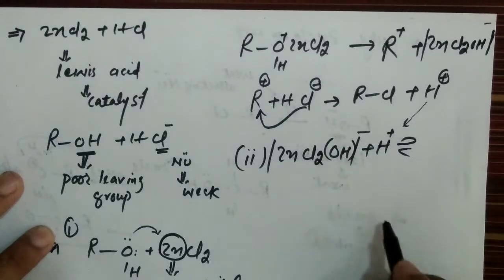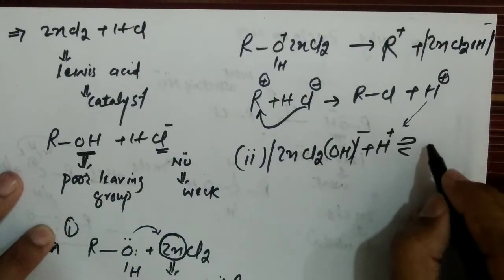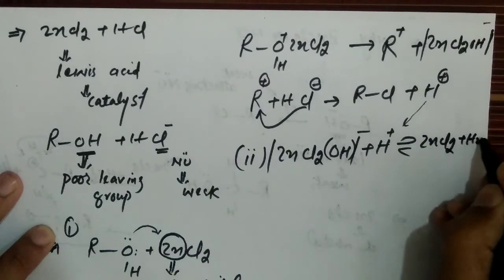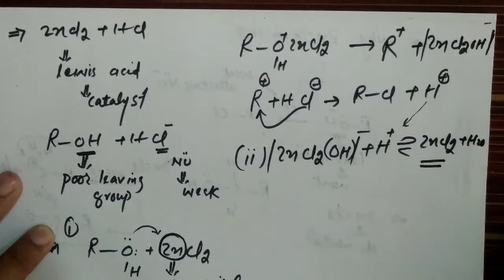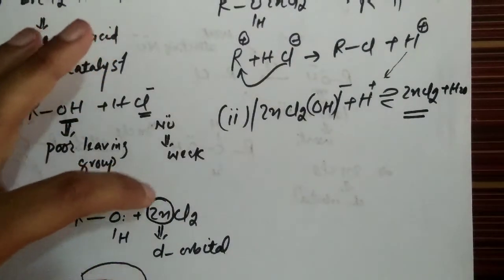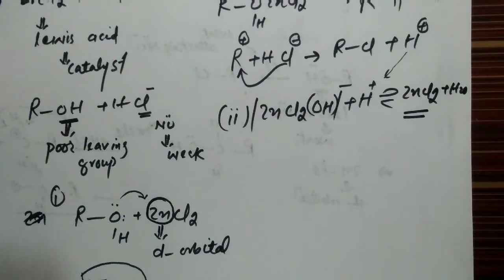Here, it forms ZnCl2 plus H2O so it shows ZnCl2 acts as a catalyst so the ZnCl2 makes an intermediate with the alcohol reaction and because of its available d orbital.